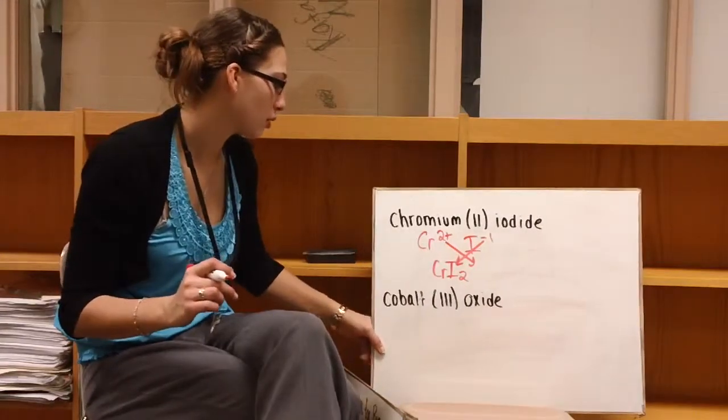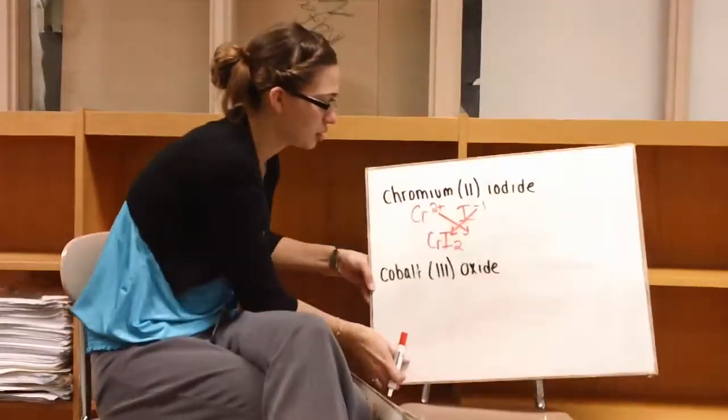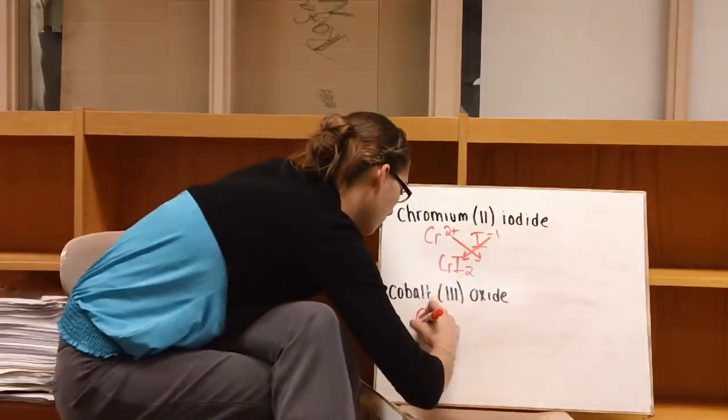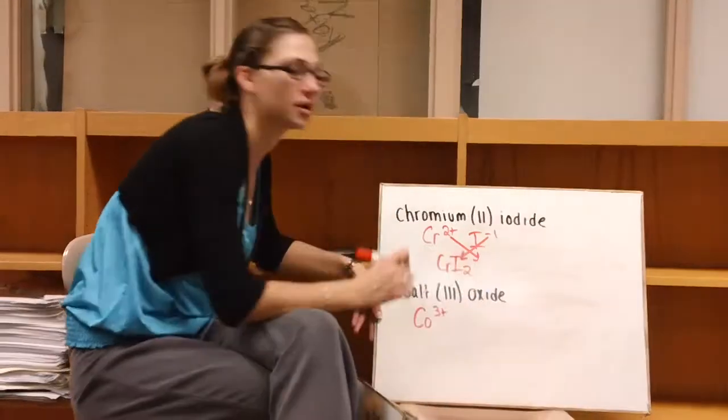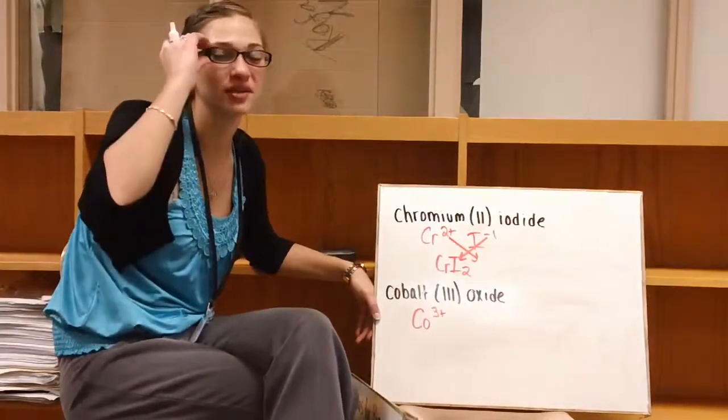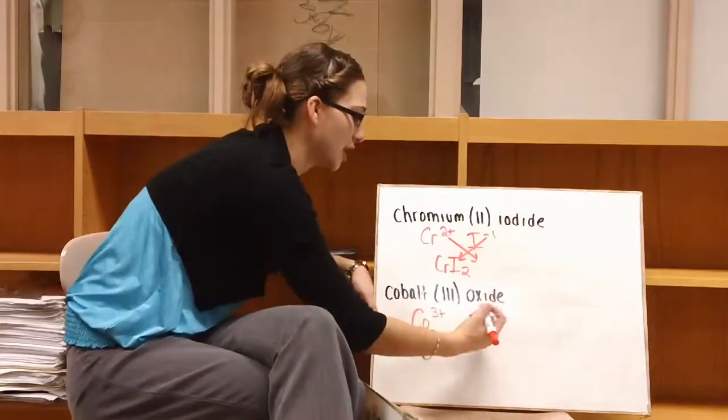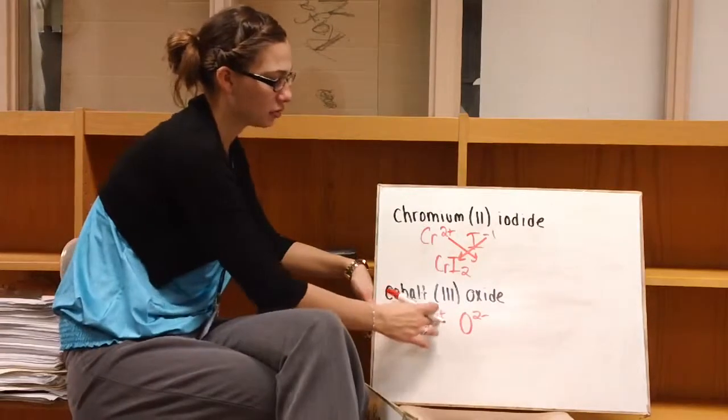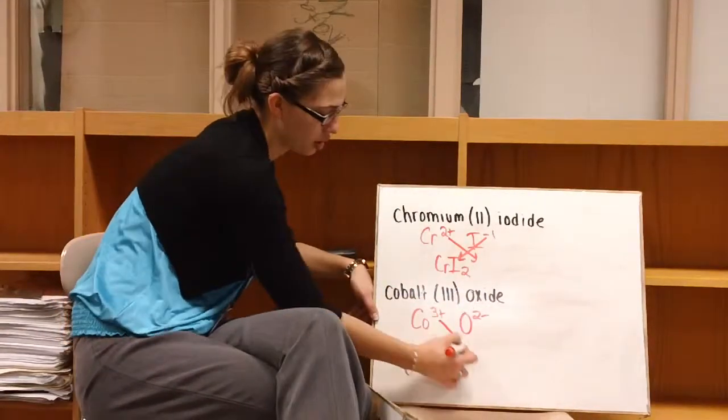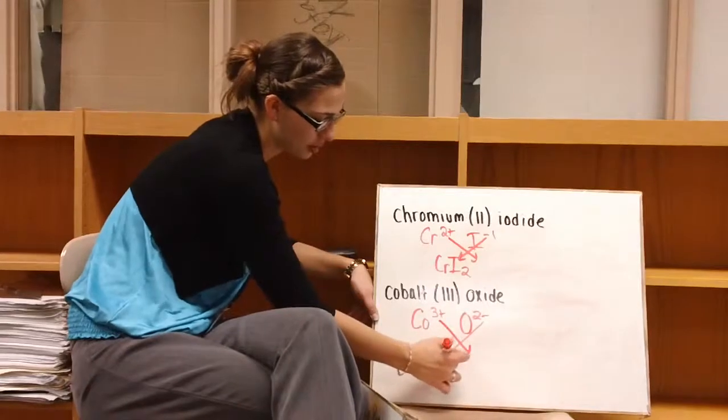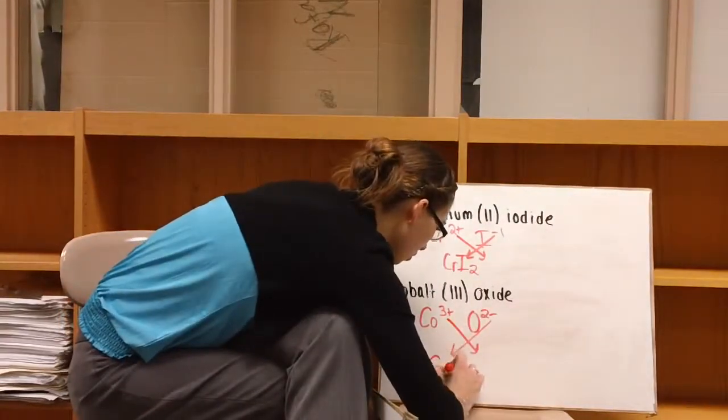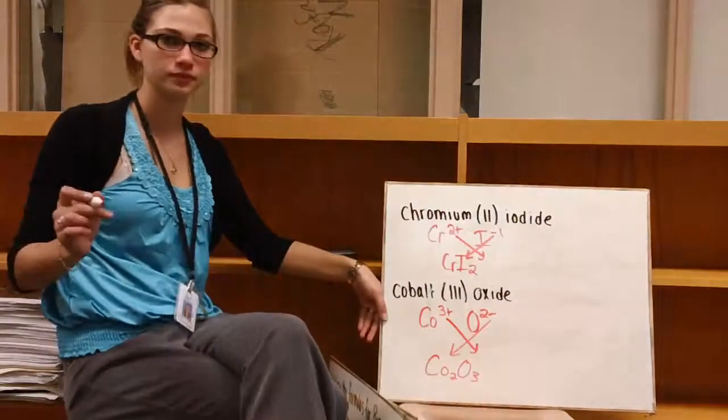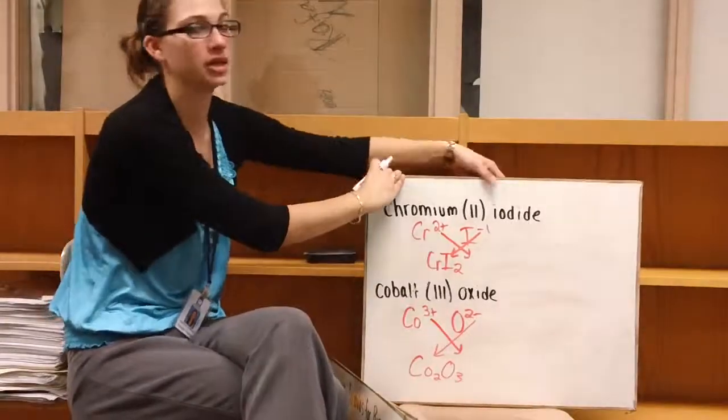All right, last one. So we have cobalt(III) oxide. So our Roman numeral tells us the charge on cobalt. So we have Co3+. Oxygen has a charge of negative two, and our periodic table will tell us that. So you have Co3+, O2-. If we crisscross our charges, we would get Co2O3. If you have questions on this still, we can go over it in class.